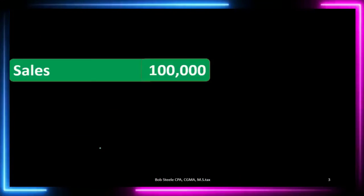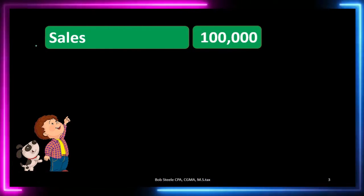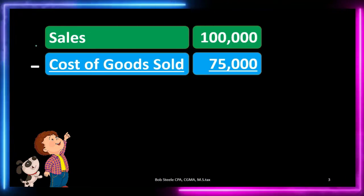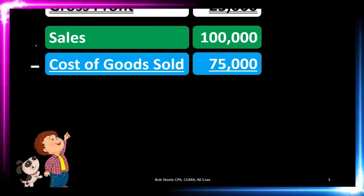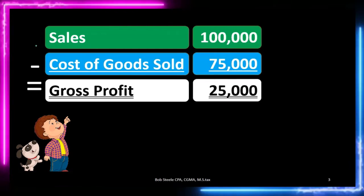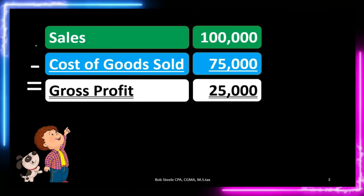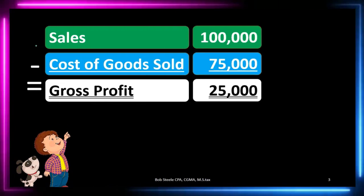Let's take a look at an example. We have net sales — sales minus returns and allowances — at $100,000, minus the cost of goods sold, the cost of the inventory, at $75,000. This gives us a gross profit at the top of the multi-step income statement of $25,000, a very important number.